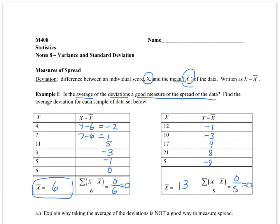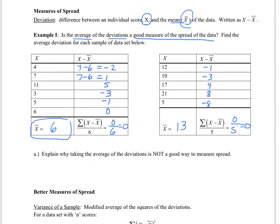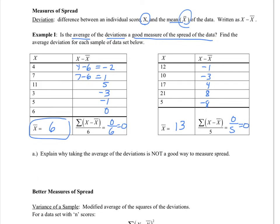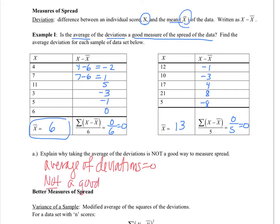What you probably noticed is that in each case, the sum of the scores is equal to 0. The reason why is because the average is the value that is in the middle of all the data — it incorporates values both above and below. So if we were to take the average of these deviations, it would always be 0, and so that is not a good way to measure spread. The average of the deviations is always equal to 0, which definitely does not tell us anything useful.